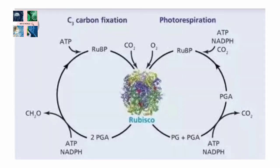Rubisco plays an important role in C3 carbon fixation and photorespiration. In the carboxylation phase, carbon dioxide is incorporated into a 5-carbon compound, ribulose 1,5-bisphosphate, and this enzyme is helpful here. The product of this reaction is a 6-carbon intermediate which immediately splits to form 2 molecules of 3-phosphoglycerate.